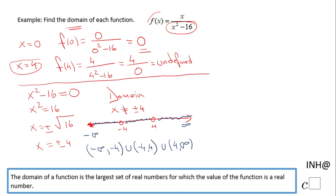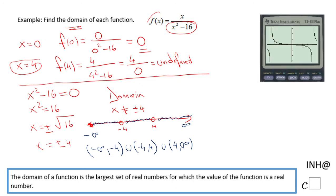We can also look at the graph of this function, which is right here. You notice we have these vertical asymptotes. The function is not defined there. Again, the domain is any real number less than negative 4, between negative 4 and 4, and greater than 4.